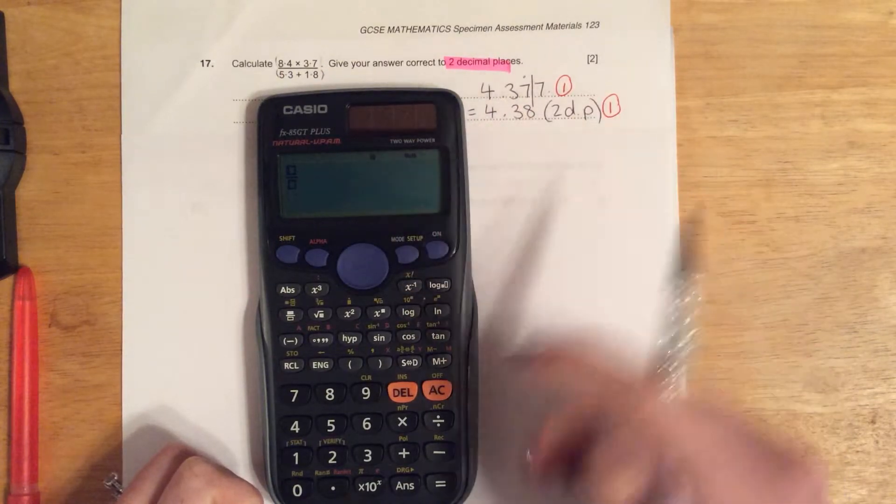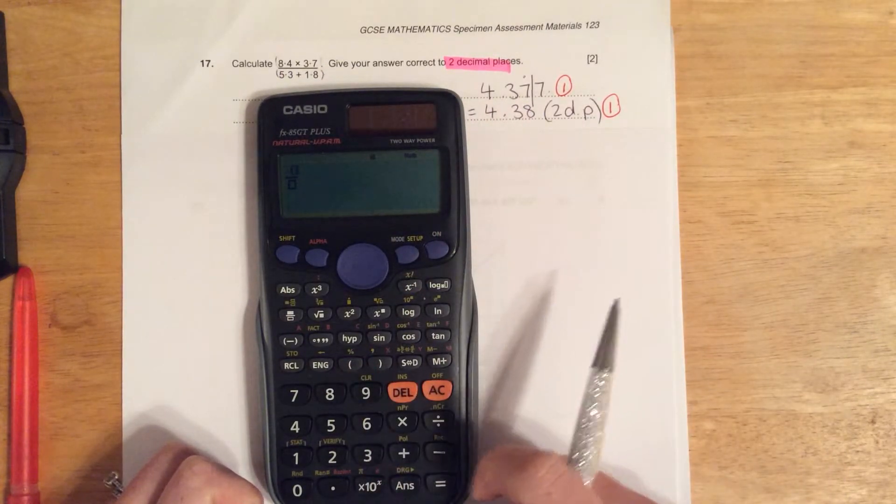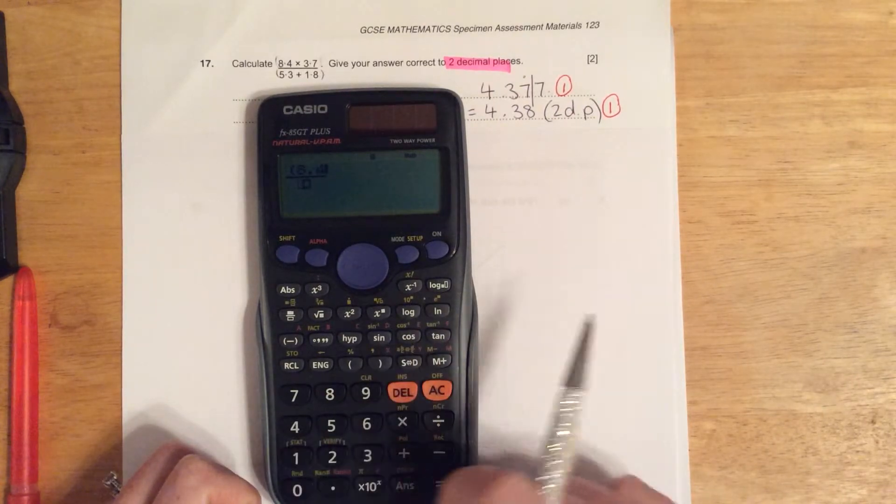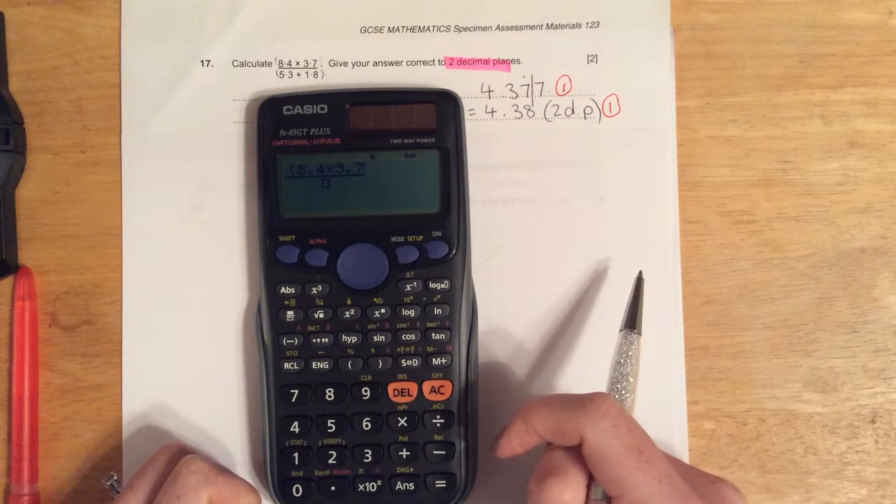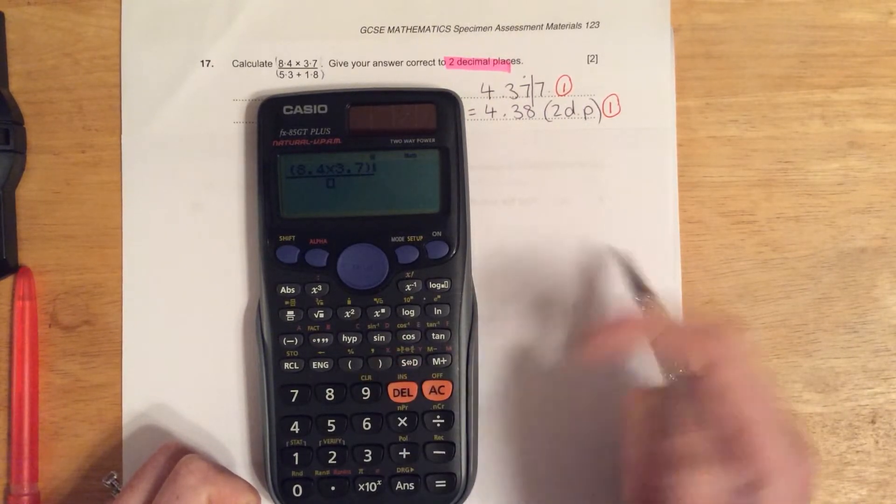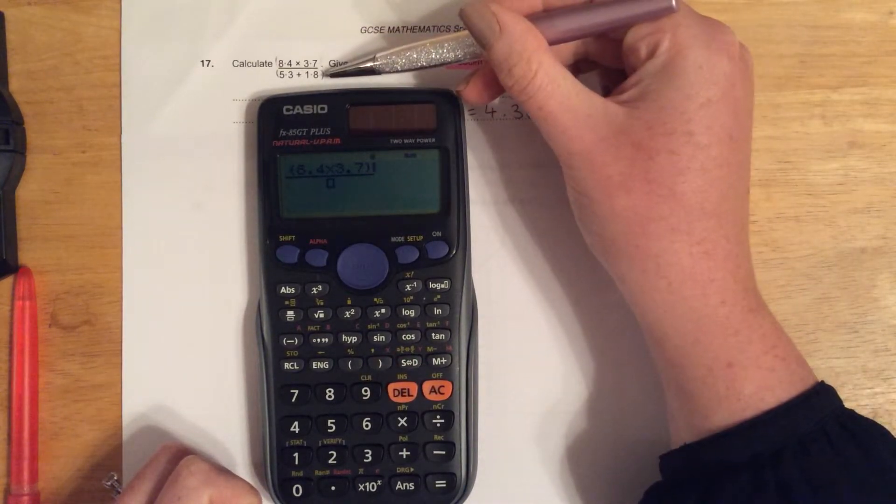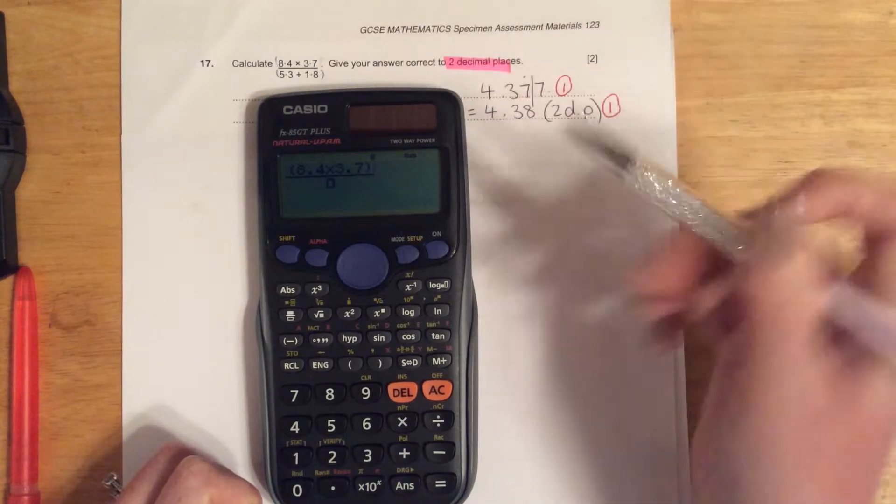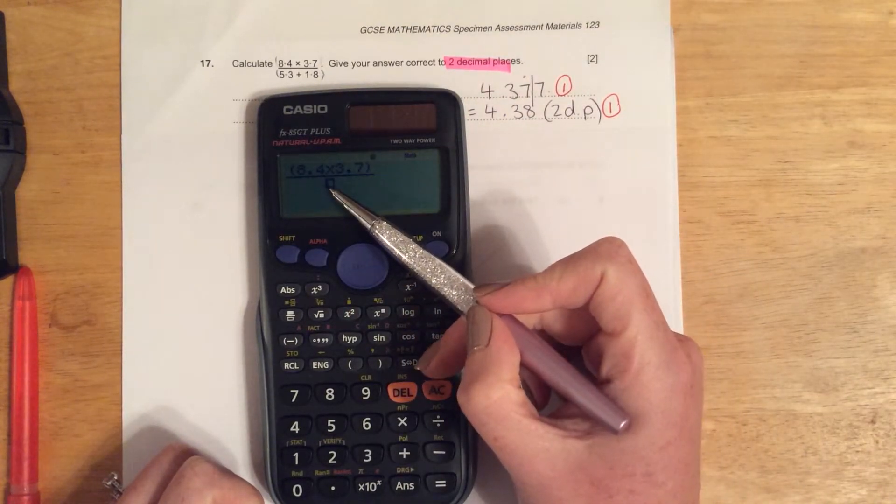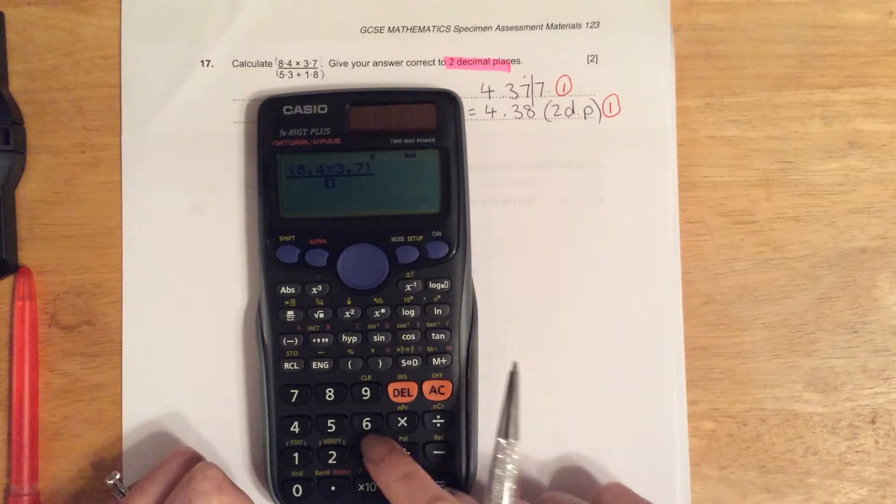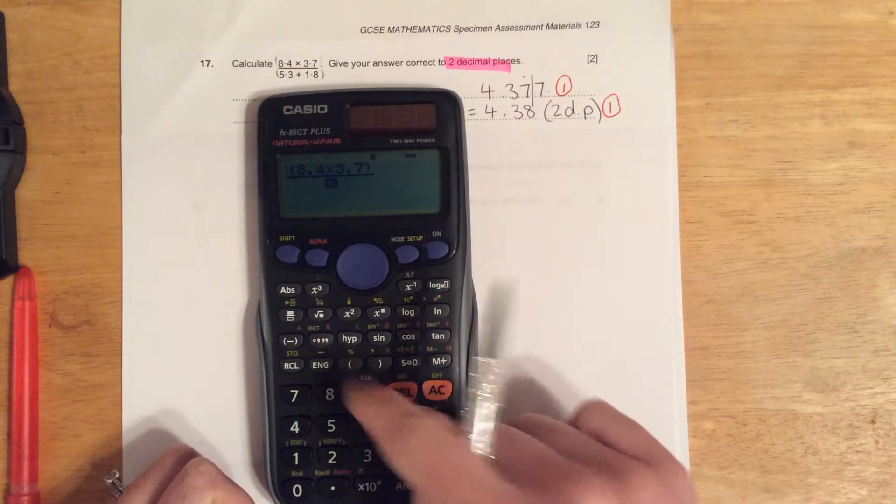Again I use brackets: 8.4 times 3.7 close bracket. Now I need to input the denominator, the bottom number of the fraction, so I press the arrow key so the cursor is in the bottom part of the fraction, and I type it again: open bracket 5.3 add 1.8 close bracket. This now looks exactly the same as it is on the test paper.